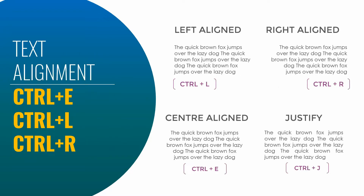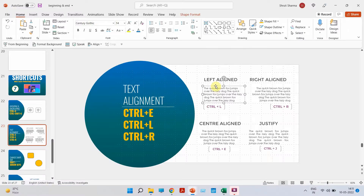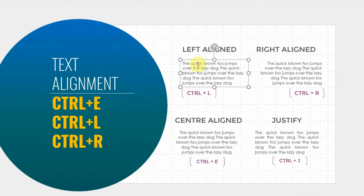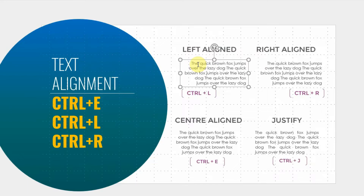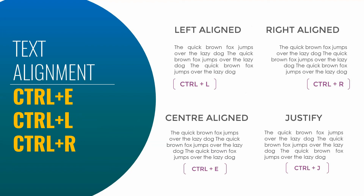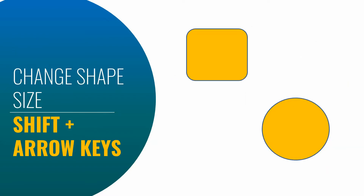Second shortcut: aligning text. These are simple and easy to remember. Ctrl+L is for left align, Ctrl+R is for right align, Ctrl+E is for center align, and Ctrl+J is for justify. You don't need to use the manual tabs anymore. Take a screenshot of these so you can use them every day in your presentations.